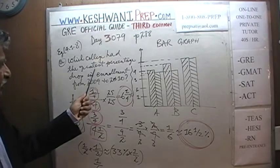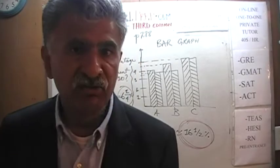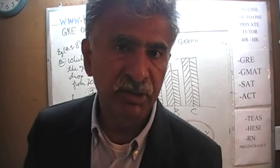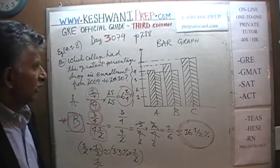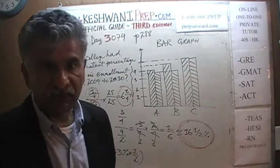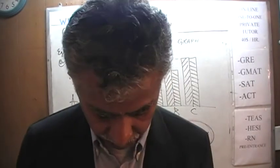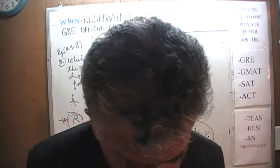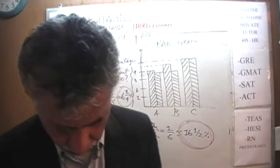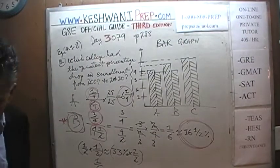College B had the greatest drop in percentage enrollment from 2009 to 2010 — a drop of approximately 16.5 percent. Let's answer the second question.